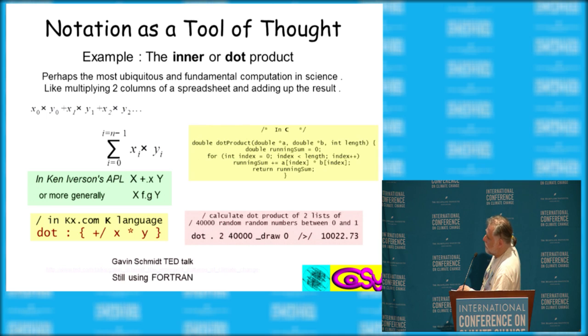In the K language, which is used mainly for high frequency trading and big data and financial applications. In fact, apparently Australia uses it to monitor their high frequency trading activity. But here's the entire definition of dot: plus slash, sum across, X times Y. And X and Y can each be a billion numbers each.